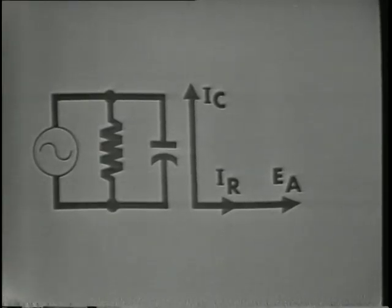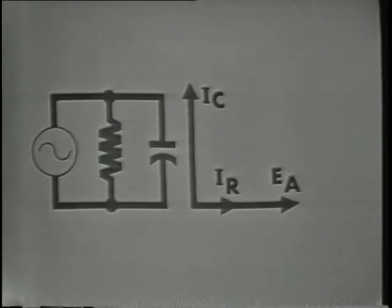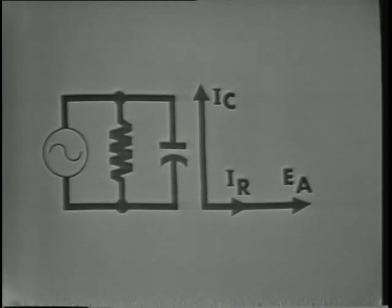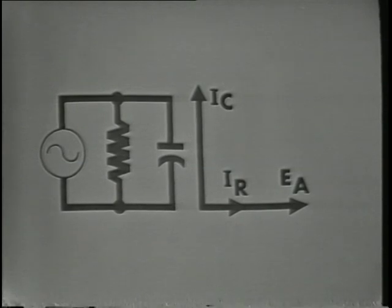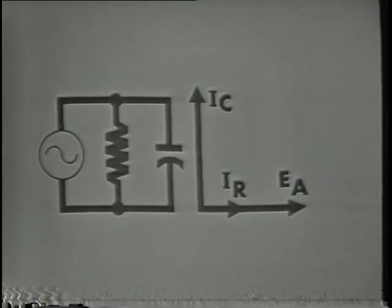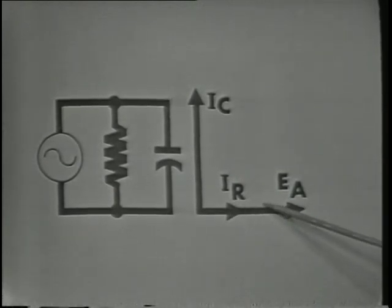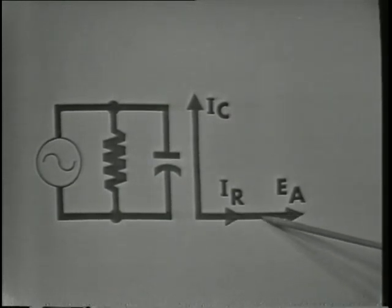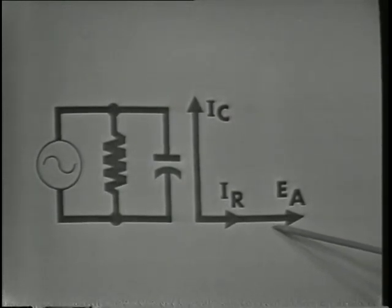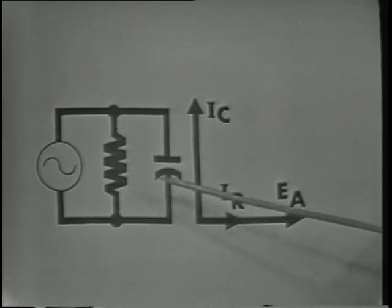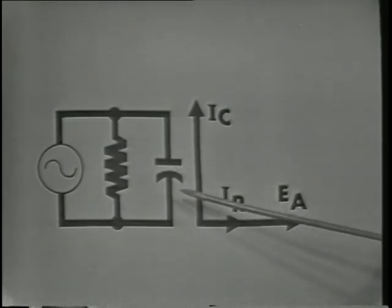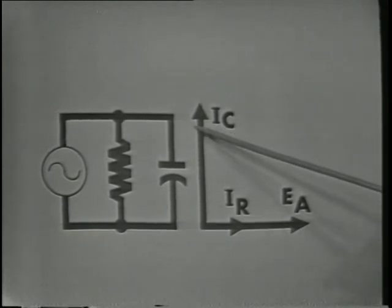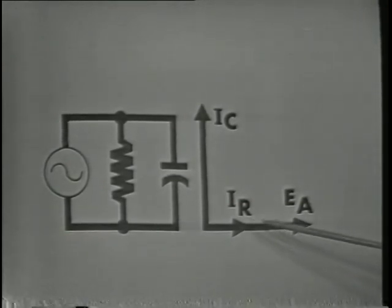The resistor never introduces a phase shift in any circuit, while the capacitor causes a phase difference between current and voltage in any kind of circuit connection. This phase difference may be shown with vectors. In parallel as in series, the voltage is the reference vector. The voltage across a parallel branch is the same, thus EA becomes the reference vector. The branch currents will show the phase differences.